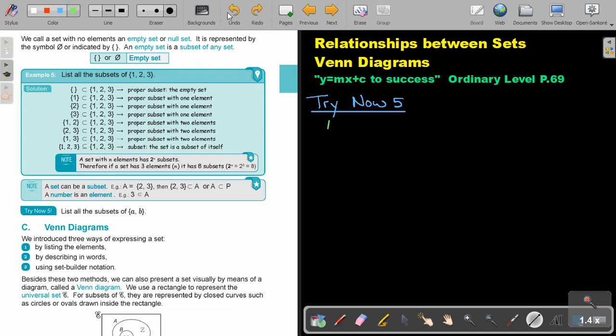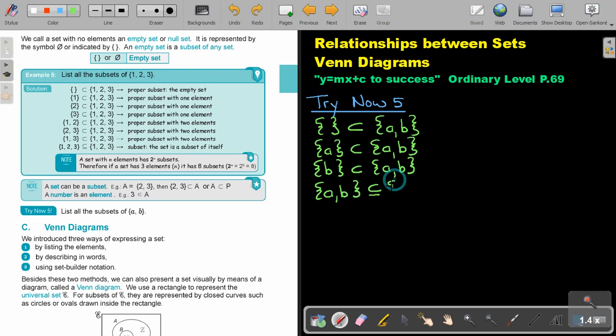So always start with the empty one. Just want to get my pen correct. And I will say it's a proper subset of the whole set {A, B}. And don't forget your brackets. And then I start putting in one element. So first, just A, and then B. And then I'm going to start by putting everything in. And now I put the equal sign.